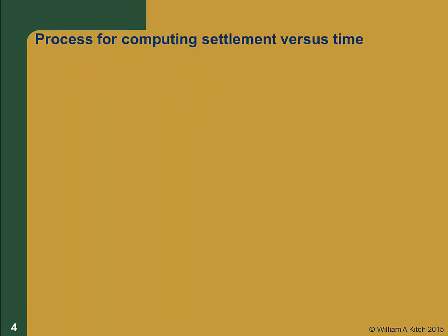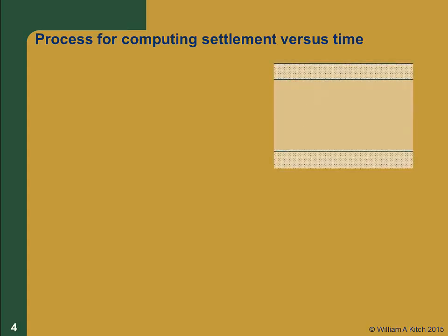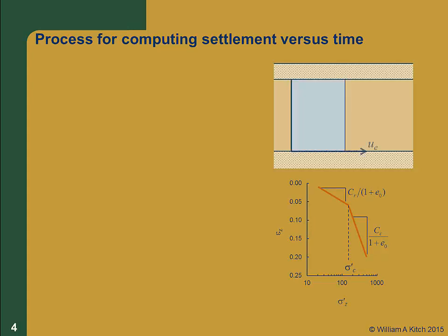Computing settlement vs. time is simply a process of combining the magnitude of settlement computations we learned in Chapter 10 with the pore pressure dissipation computations we just learned in Module 11.1. An example will illustrate the process best. Let's consider the doubly drained soil layer shown here, with the strain vs. log effective stress shown below it. We'll assume a fill has just been placed on the ground surface and we have this initial excess pore pressure distribution. Our objective is to compute the consolidation settlement as a function of time.